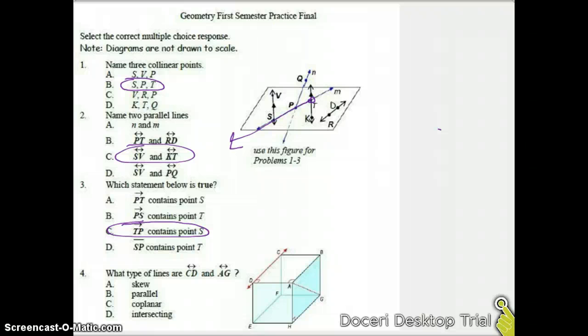For number four, we're looking at what type of lines we have for CD and AG. If I draw those in, CD is here, AG is here. We're going to eliminate some answers here. We know it's not intersecting - they don't have a point in common. We know they're not coplanar because they're not on the same plane. If they're not coplanar, then they're not parallel, but they are going to be skew. Skew just means two lines that don't intersect and are not on the same plane.